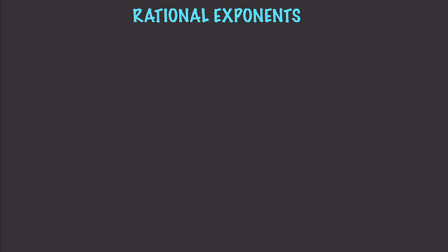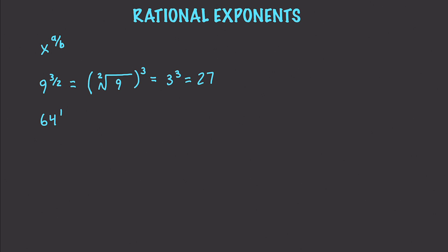That brings us to rational exponents. With something like x to the a over b, b is the index of the radical and a represents the exponent of the radicand — the power to which the expression is raised. So if we have 9 to the 3 over 2, this translates into the square root of 9 cubed. And conversely, the fourth root of 64 to the first translates into 64 to the one-fourth. That is how we work with and translate rational exponents.